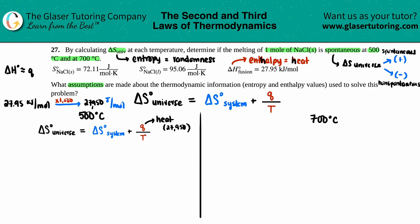For temperature, the units must be in kelvin since the S values use kelvin. They gave temperatures in Celsius, so I convert: 500 + 273 = 773 K, and 700 + 273 = 973 K.